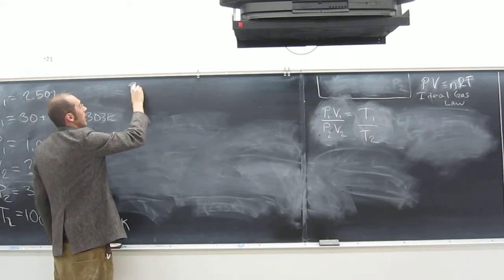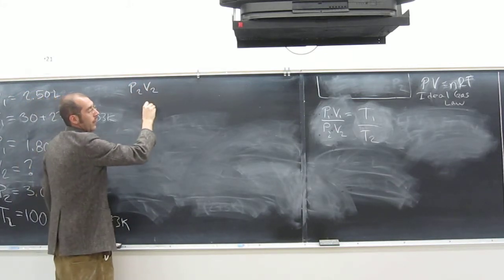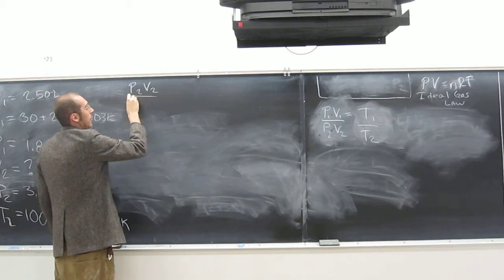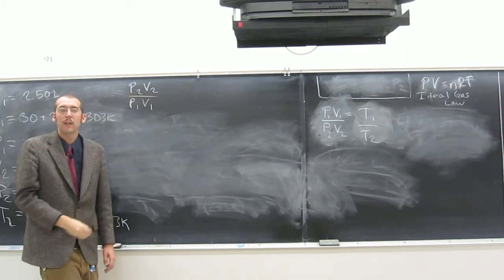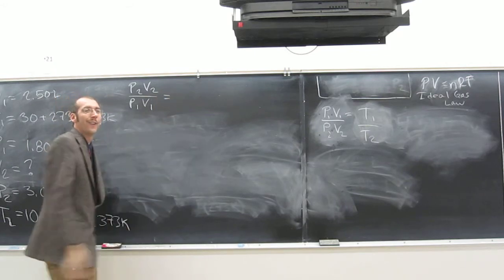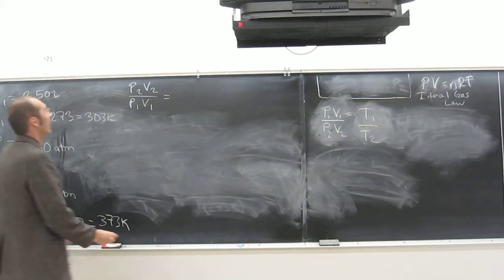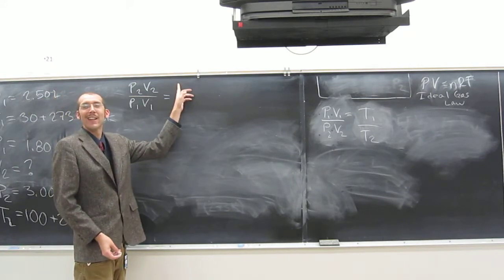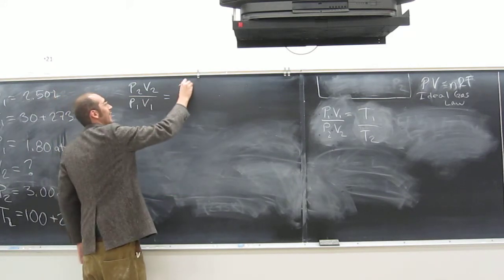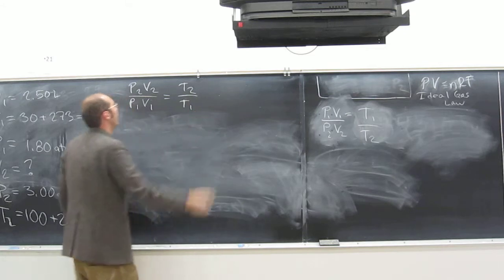So what do we get if we flip it? We get T2 over T1 equals P2V2 over P1V1. Is that cool, everybody? What about on this side? T2 over T1.